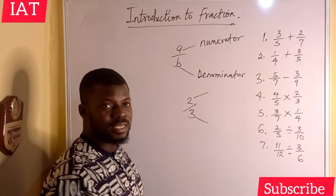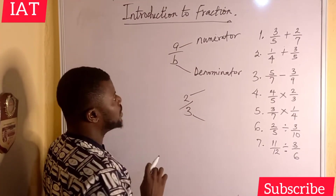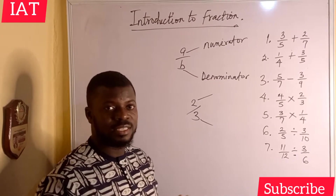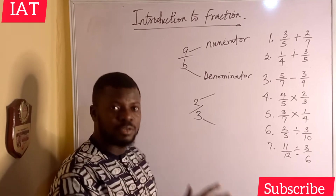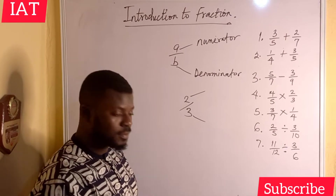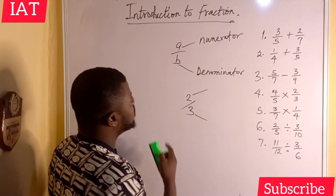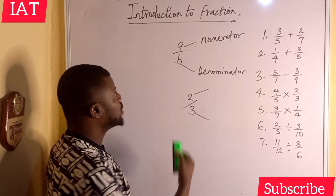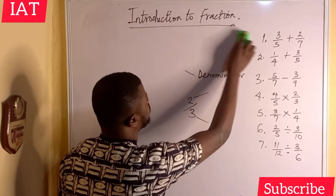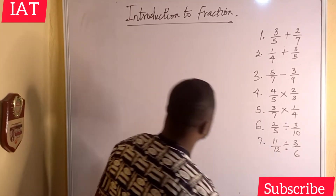Fraction is expressed as a numerator dividing a denominator. The first thing to note is the definition of fraction — it is the part of a whole number, or you can define fraction as a part of a set. The second thing is that fraction is expressed as a numerator dividing a denominator. Now let's consider the types of fraction.